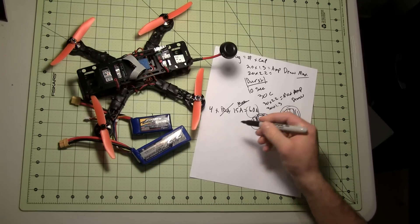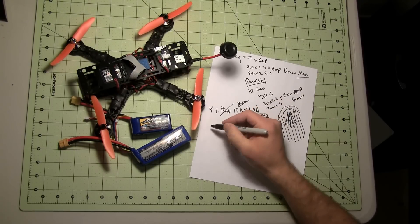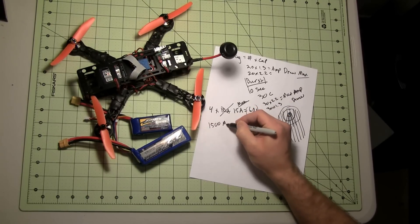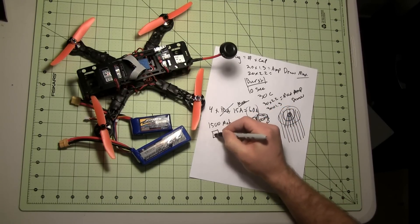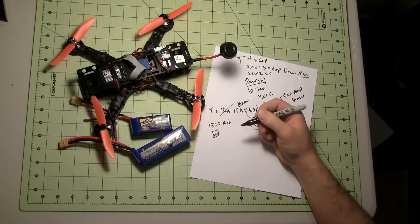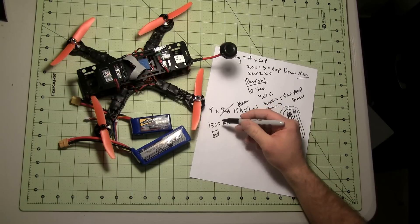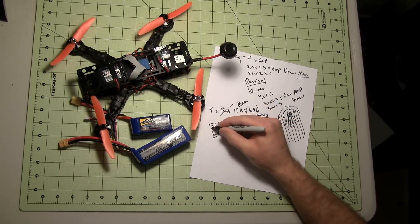So if we take 60 amps, and I want to look at a 1500 milliamp hour battery. And remember, that is your gas tank, that's just how much energy you can hold. So, this equals 1.5 amps.